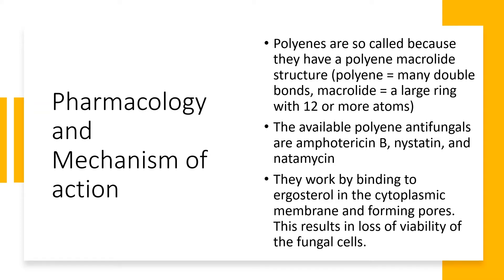The commonly available polyene antifungals are amphotericin B, nystatin, and natamycin. How do they work? They work by binding to the ergosterol in the fungal cytoplasmic membrane and making holes in the cytoplasmic membrane. When the holes are made in the cytoplasmic membrane, fungal contents will leak outside and that results in loss of cell viability. So that is how they destroy fungal infections — by binding to ergosterol and causing cytoplasmic membrane damage.